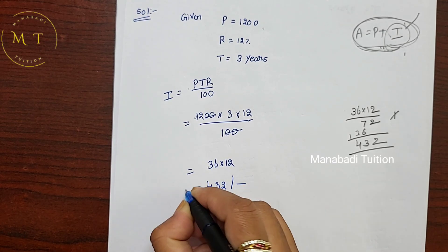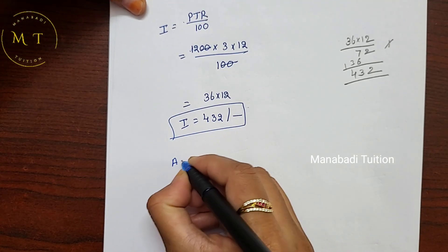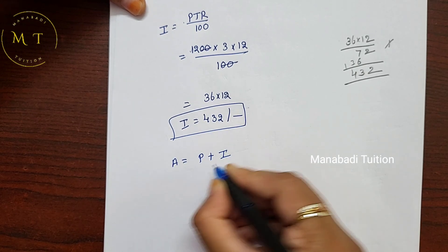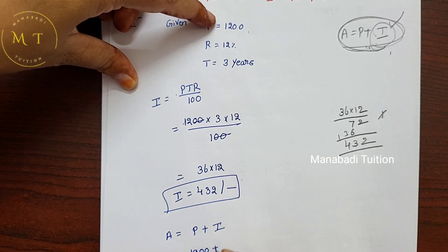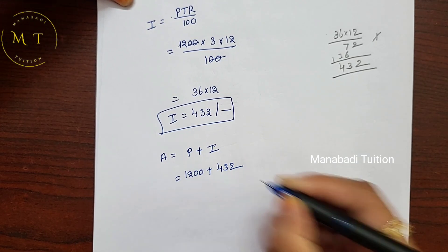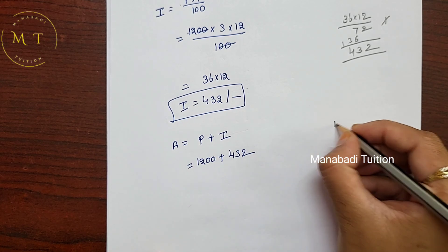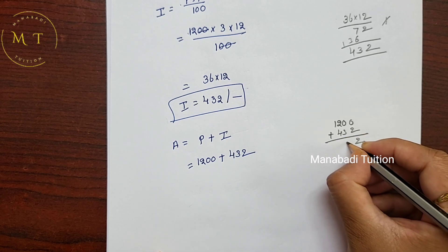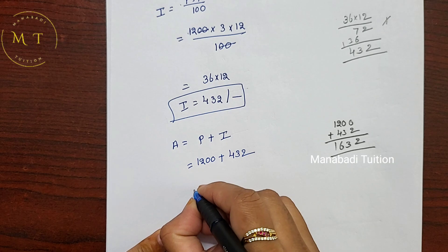Interest = 432. Amount equals principal plus interest: 1200 plus 432 equals 1632. Total amount is 1632 rupees.